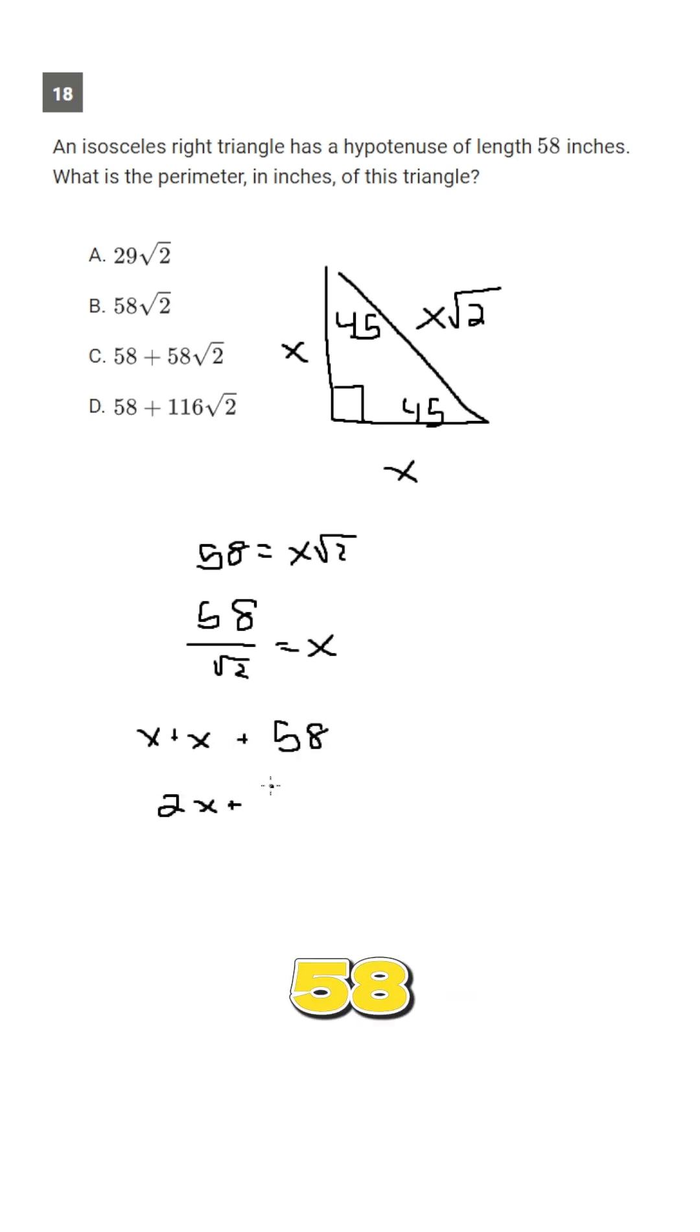If we plug this in, it's 2 times 58 over root 2 plus 58, and that would then equal 58 root 2 plus 58. So our answer to this question is going to be C.